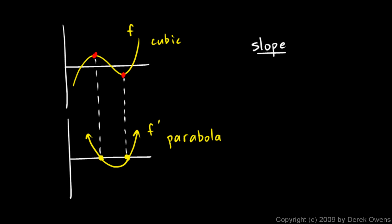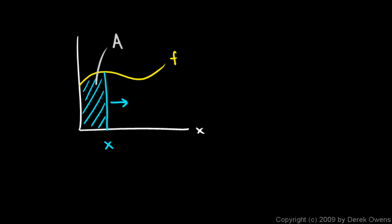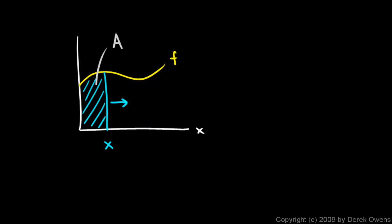Just as we can take all the different slopes along the graph of f and use those values to graph a new function called the derivative, we can take all the different area values at each value of x — since at each x there is a different amount of area swept out — and graph a new function that represents the area under the graph. That idea, that the area under a graph is itself a function of x that can be graphed, is probably the single most foundational point for the entire second semester of any calculus course.